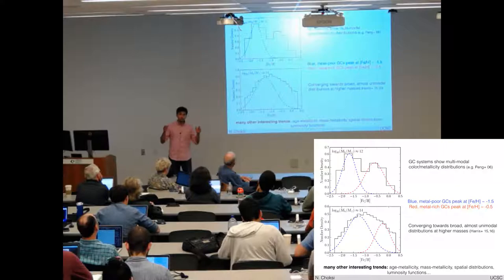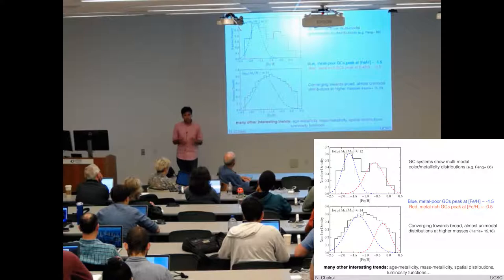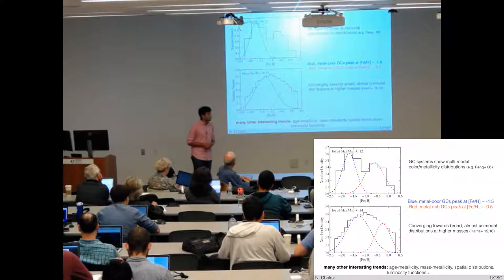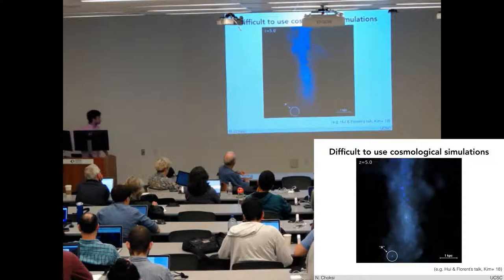what we're finding is that the metallicity distribution actually gets fatter. You get a broad, almost unimodal distribution at an Fe over H of about minus one. And there are tons of other interesting scaling relations for globular clusters that we've now really started to drill down on, now that we have good statistics.